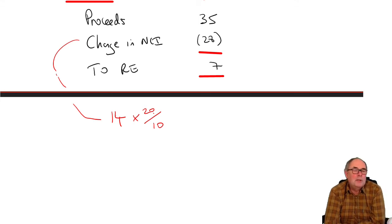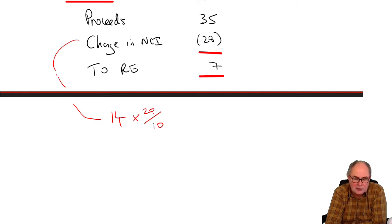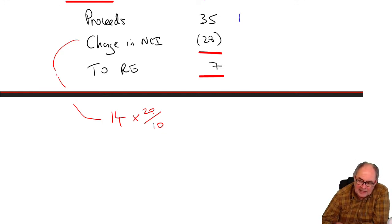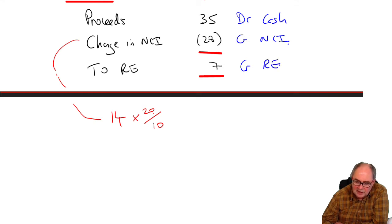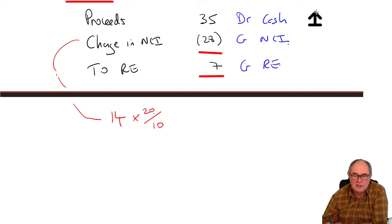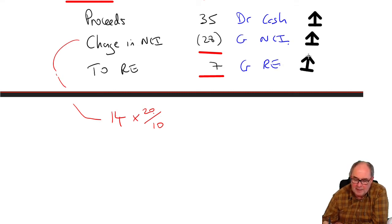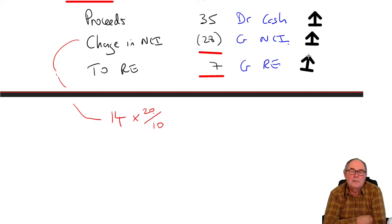I would probably not bother learning a formula for that — you'll only be doing one, just think about it and you'll get it right. Double entry: debit cash, credit NCI. It looks to me like there's a credit to retained earnings. So on that one, cash is going up by 35, NCI is going up by 28, and to make it balance, retained earnings will go up by 7. But as we keep saying, it's not a proper profit or loss.